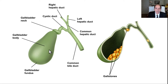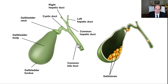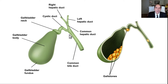Here's the gallbladder, and the most important thing to know is the cystic duct. The cystic duct connects the gallbladder to the common bile duct, which is then going to drain into the bowel — the duodenum, which is the beginning of the small bowel.